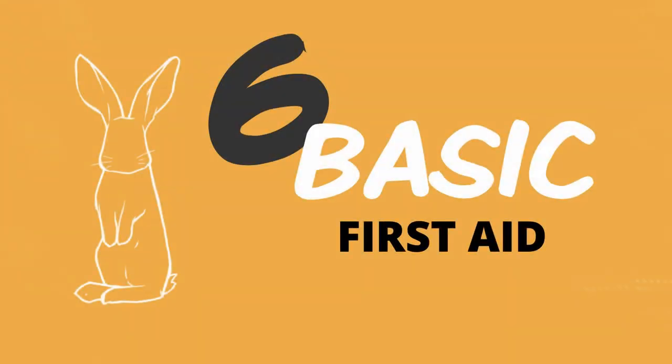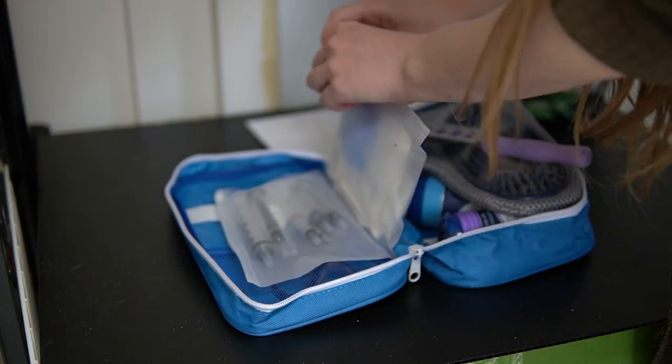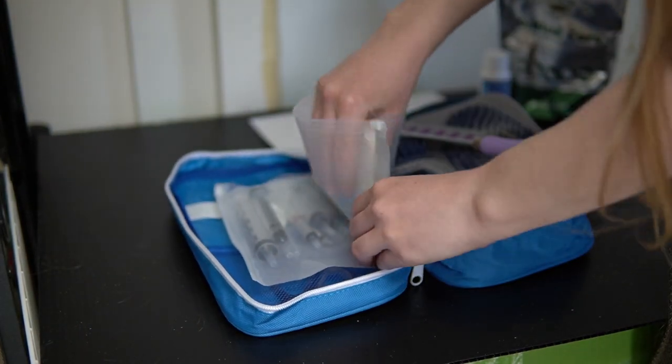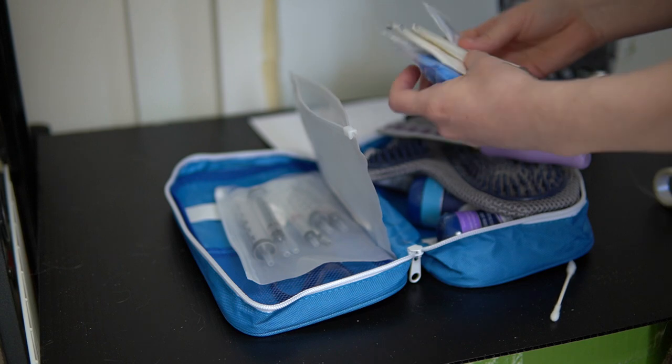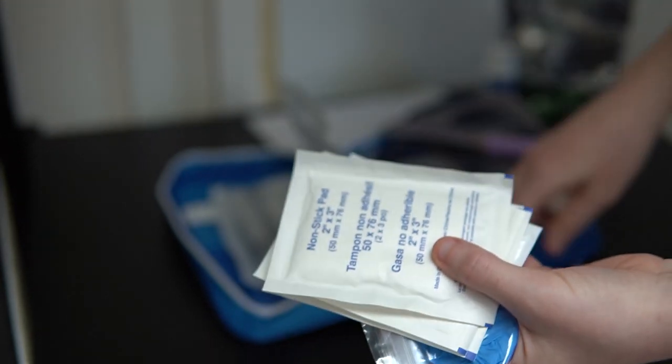In addition to these important emergency items, you also want to make sure you have all the basics in your first aid kit. So you want to make sure that you have some bandages and gauze pads and q-tips and just those little things that are really helpful if your rabbit gets a little cut or scrape. You just want to make sure you have them around in a place where you know where they are so that you can help your rabbit in the case of a minor injury.